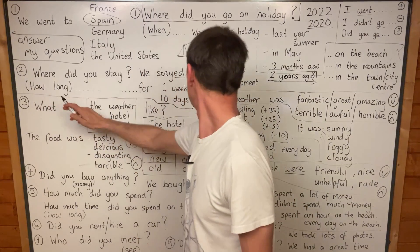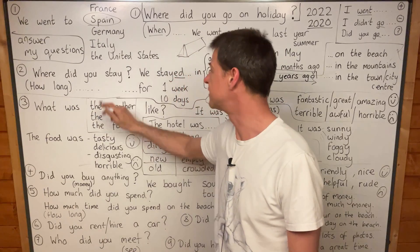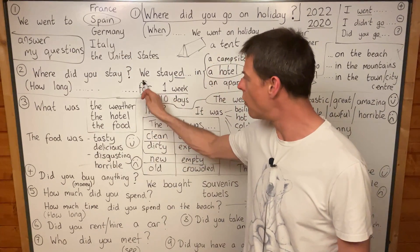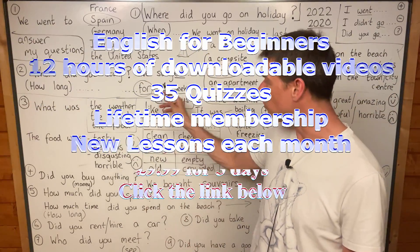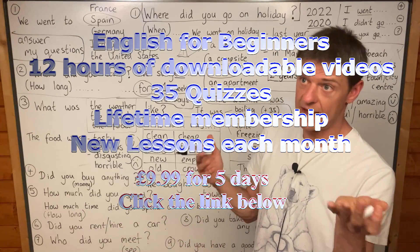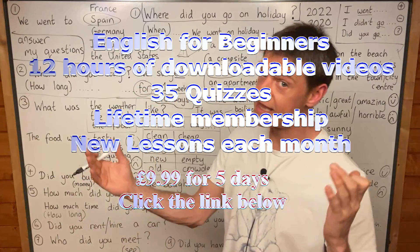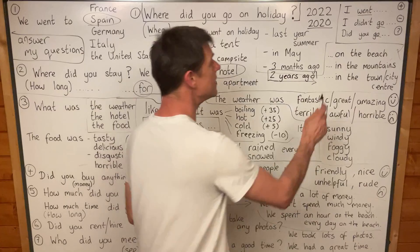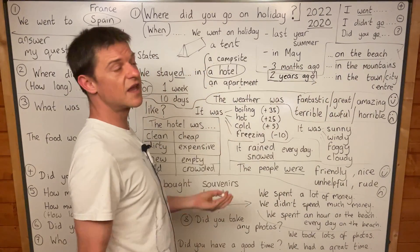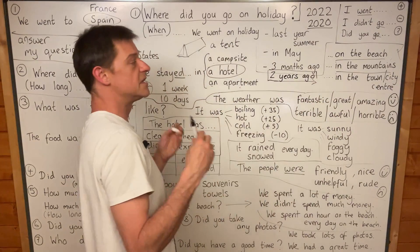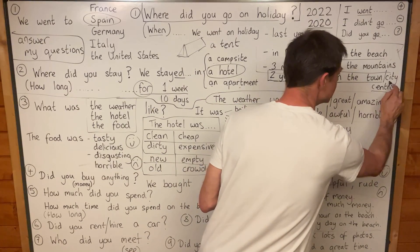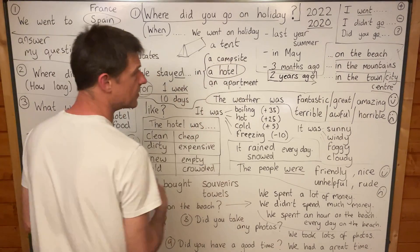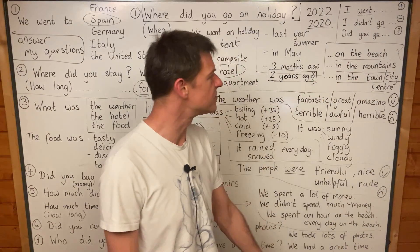How long did you stay? We stayed in Spain for one week — for seven days. How long were you on holiday? Did you stay in a hotel on the beach? Did you stay in a campsite in the mountains? Did you stay in a hotel in the town centre or city centre? Where was your hotel? Where was your campsite — was it near the beach, in the mountains, in the city?